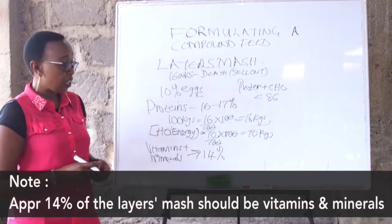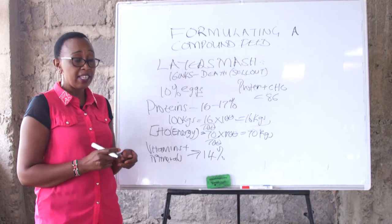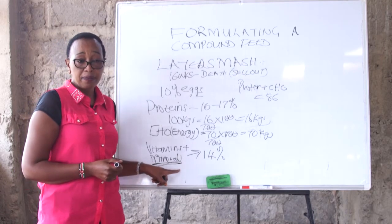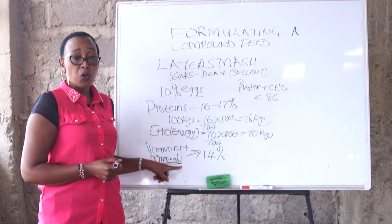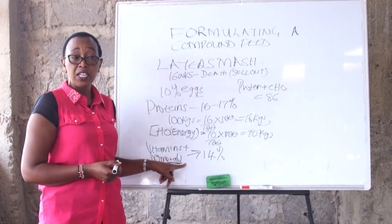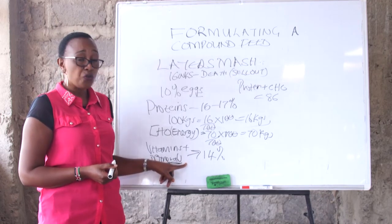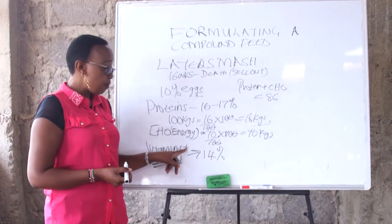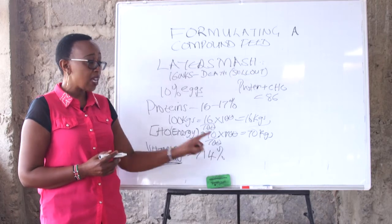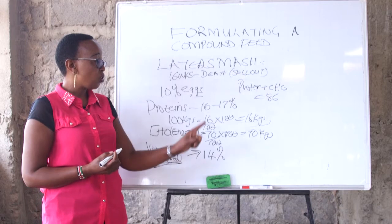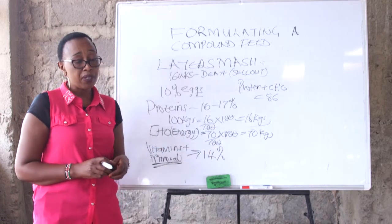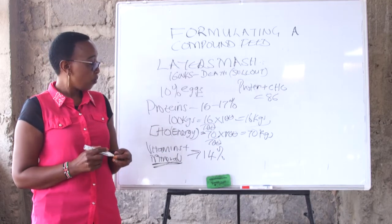The reason why minerals and vitamins are higher in the layers is because the minerals are required in high percentages — this bird is laying. As the bird lays, the shell requires calcium and the bird also requires calcium for its skeletal muscles. So calcium levels should be high; you should maintain the calcium to phosphorus ratio at high levels, 16 is to 1. In summary: in the chick mash, minerals require just 10%; in the grower's, 26%; and in the layers, 14%.